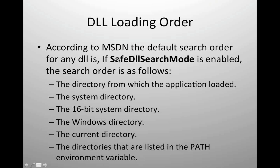You may ask what if Safe DLL search mode is disabled. By default in Windows 7 and onwards, Safe DLL search mode is enabled. With some earlier versions of XP, this mode was not enabled. In case Safe DLL search mode is not enabled or you have explicitly disabled it, the current directory will move to the second position, above the system directory. The rest of the path will remain the same.